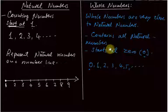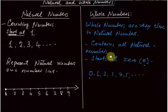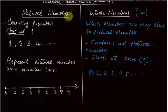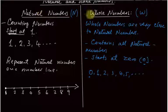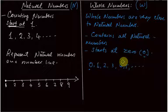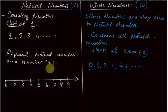Whole numbers are denoted by W, while natural numbers are denoted by N. This symbol represents natural numbers and this symbol represents whole numbers. It is very important to know these notations.